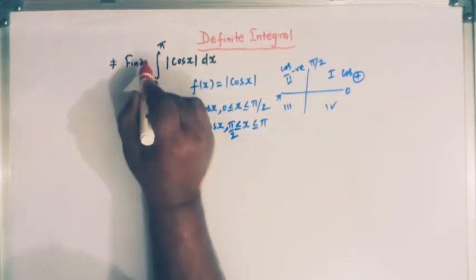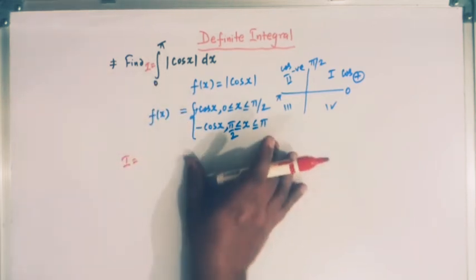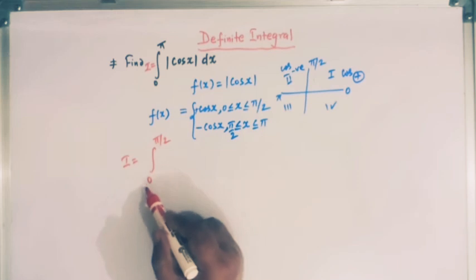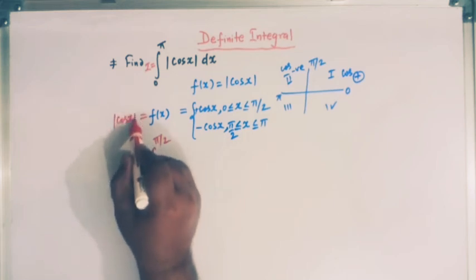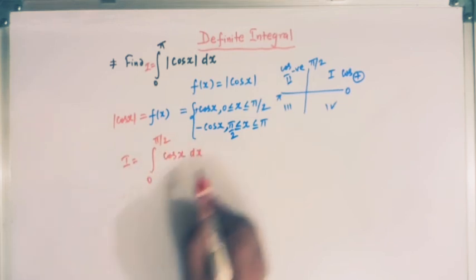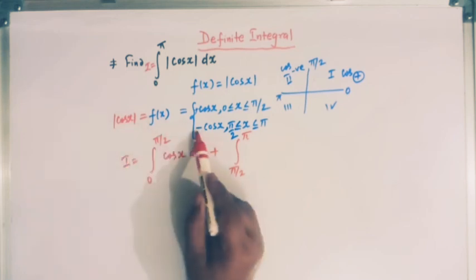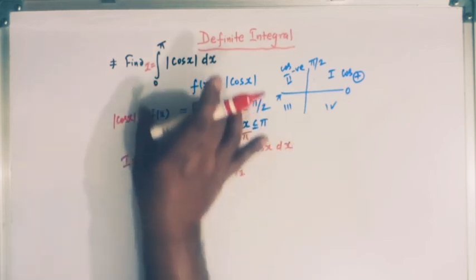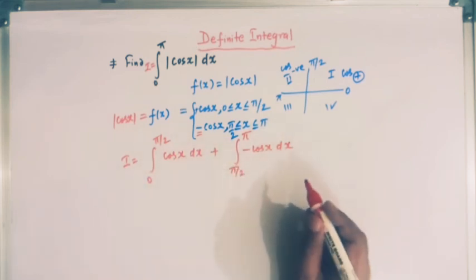Now, let us denote this integral by I. The integral can be written as the integral from 0 to pi by 2 of cos x dx — since mod of cos x equals positive cos x there — plus the integral from pi by 2 to pi of minus cos x dx. We have expressed this integral as a sum of two integrals due to the additive property.